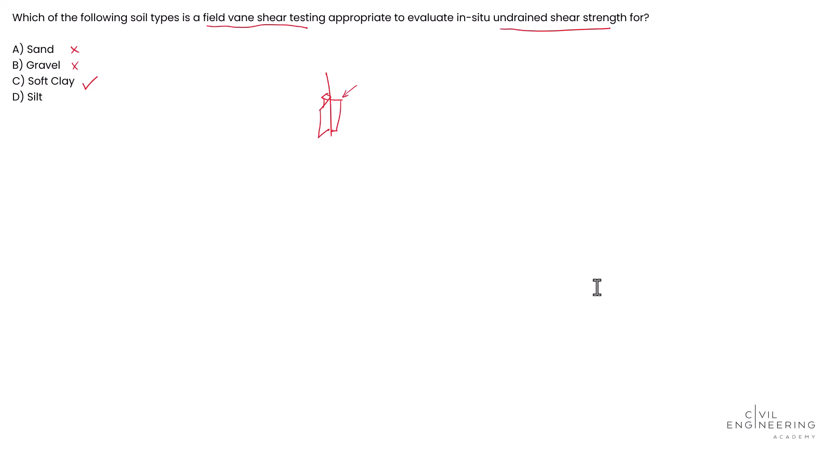Silt can be either cohesive or non-cohesive depending on its composition and how the moisture content is in it. However, these vane shear tests are usually less common when we use them for silt. So this is kind of an X and a check. It doesn't really give us a clear answer or more information on that. So the best answer here is going to be answer C on this one to help us figure out how we use a field vane shear test to appropriately evaluate our in-situ undrained shear strength for this.